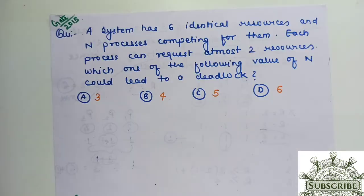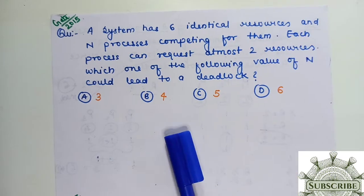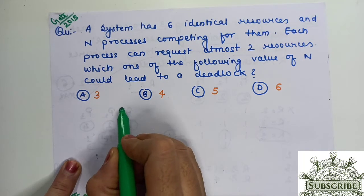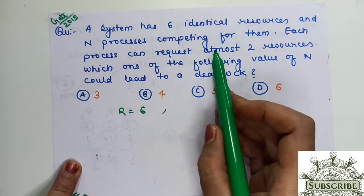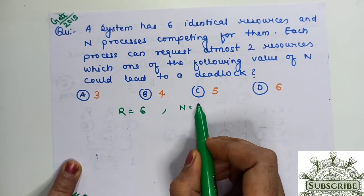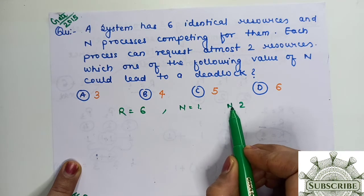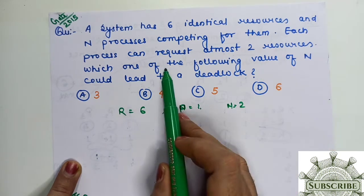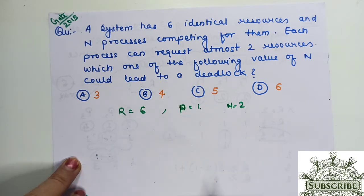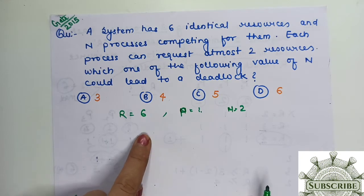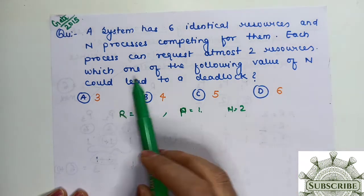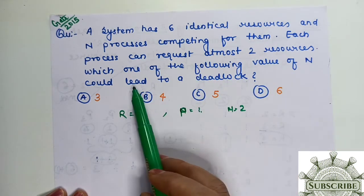Let's go to the next question. A system has 6 identical resources and n processes. R ki value is 6. N processes competing for them. Each process can request at most 2 resources. Number of processes is not given. Which one of the following value of n would lead to deadlock?